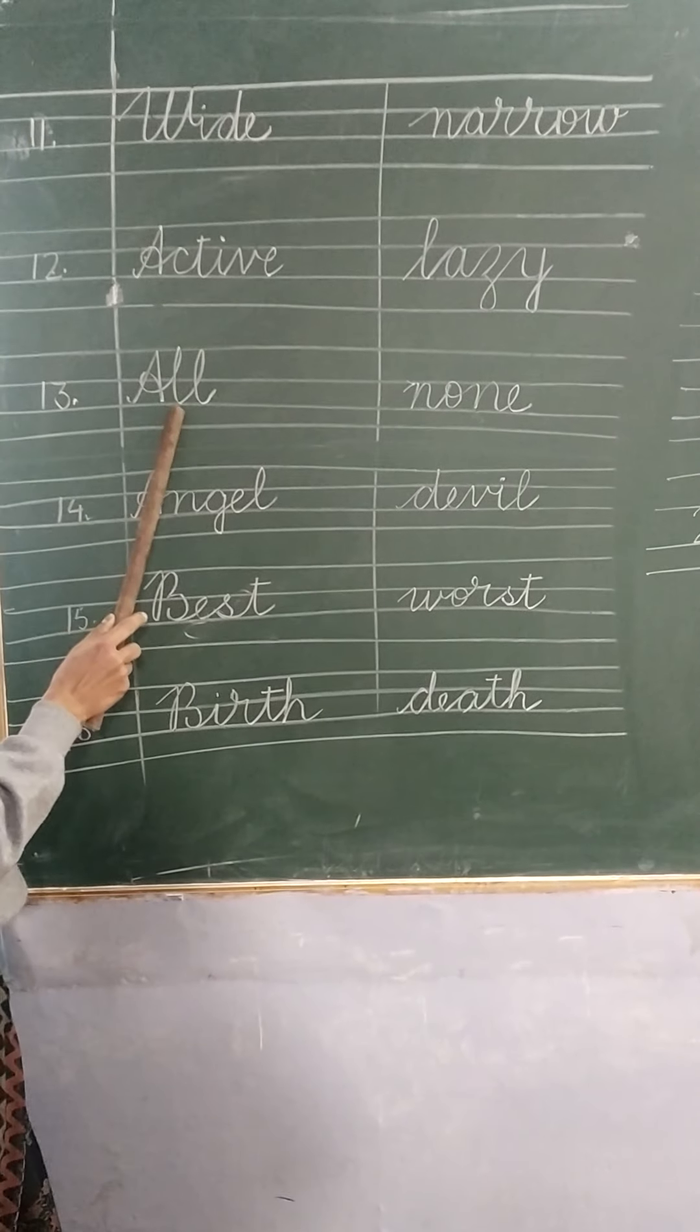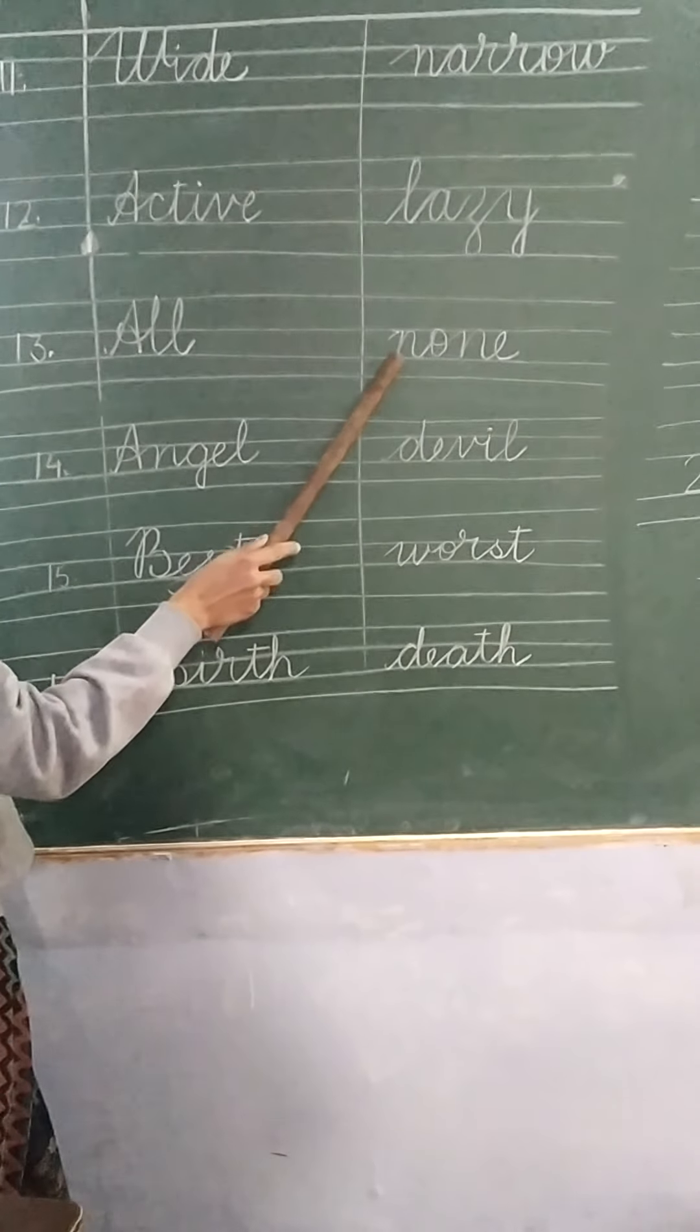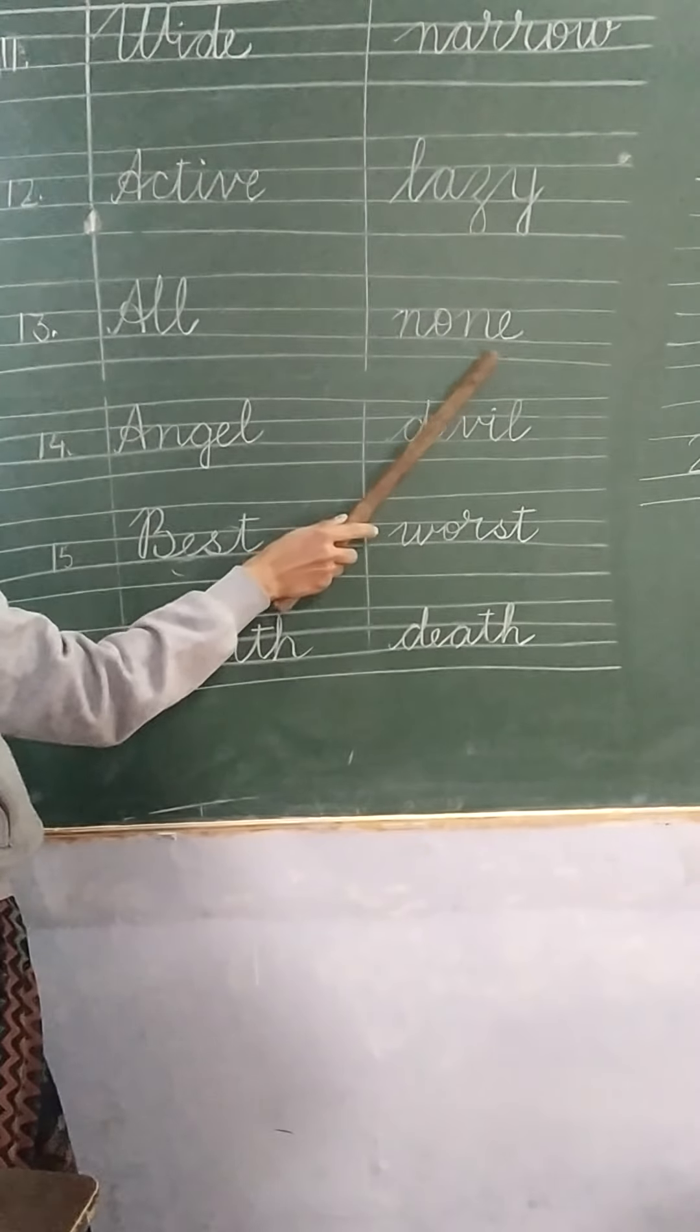Number 13. All. A-L-L all. And the opposite of all is none. N-O-N-E none.